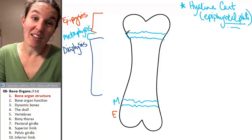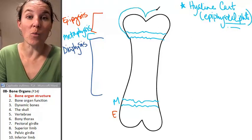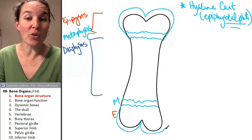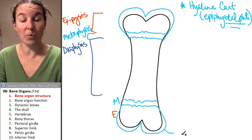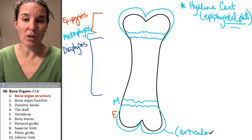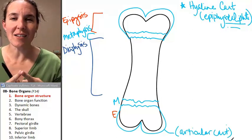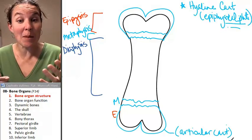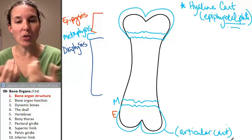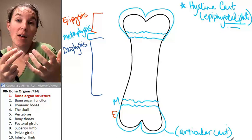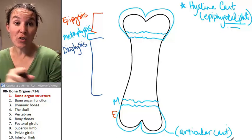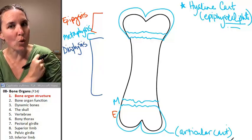There's another use of hyaline cartilage, and so we use hyaline cartilage to also build a structure called articular cartilage. Articular cartilage is not a tissue type. That's the name of the structure.